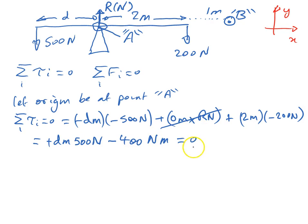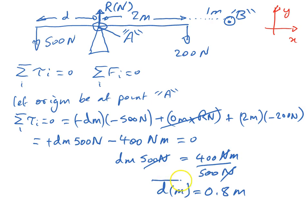That is equal to zero. Adding 400 newton metres to both sides, we have d metres times 500 newtons equals 400 newton metres. Then dividing both sides by 500 newtons leaves us with d metres, which is equal to 4 divided by 5, which is 0.8 metres. So we have been able to calculate d metres without ever worrying about what the force of r newtons was.